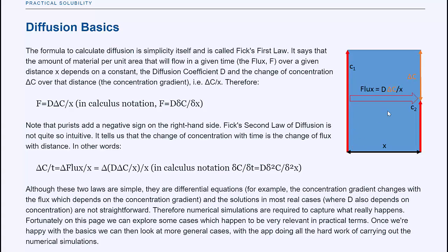So if you have a large concentration difference and a small distance, then you get a large flux for a given d. And if there's a small concentration difference or a large distance, you get a small amount of stuff diffusing through.